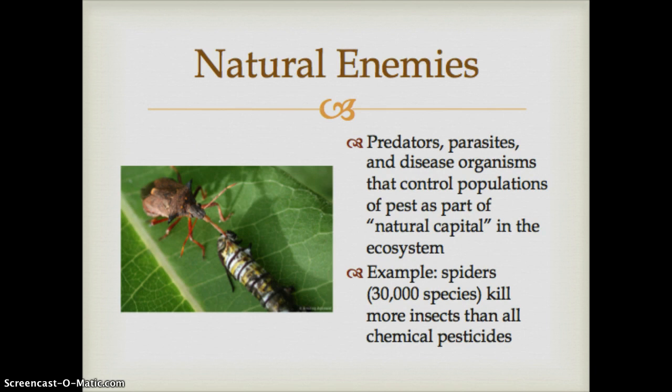When it comes to pests, a lot of times there are actually natural enemies of things that we consider pests. Things might have natural predators, parasites, or some sort of disease that helps control a population — that's considered natural capital in the ecosystem. A great example are spiders. There are over 30,000 different species of spiders in the world, and they actually kill more insects than all chemical pesticides applied across the globe. Most people consider them kind of yucky, but without them we would be invaded by lots and lots of other insects.